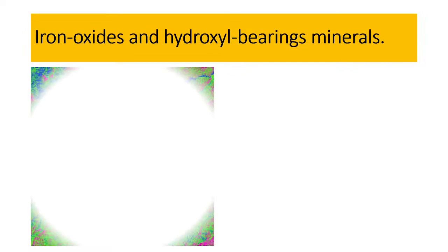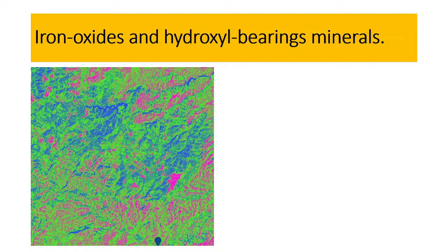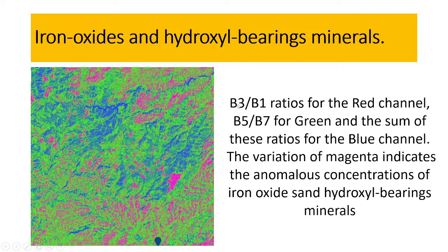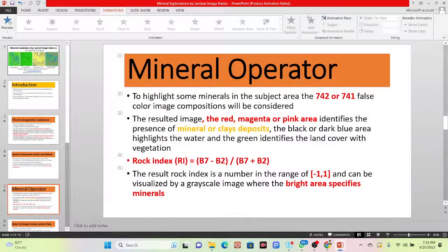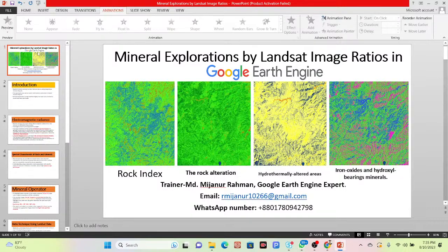For hydroxyl bearing minerals, the magenta color identifies iron oxide and hydroxyl bearing minerals. When you apply the ratio B3/B1 for the red channel, B5/B7 for green, and the sum of the two ratios (B3/B1 + B5/B7) for the blue channel, the variation of magenta indicates anomalous concentration of iron oxide and hydroxyl bearing minerals.